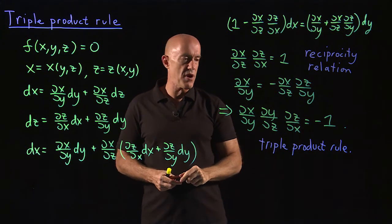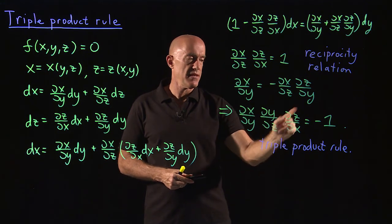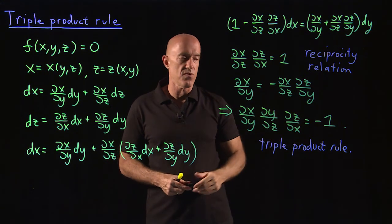Which is that dx dz is equal to one over dz dx, which makes a lot of sense. Easy to remember. And then using that relation, we can work the second parentheses. And then we get the triple product rule. dx dy dy dz dz dx equals not plus one, but minus one.